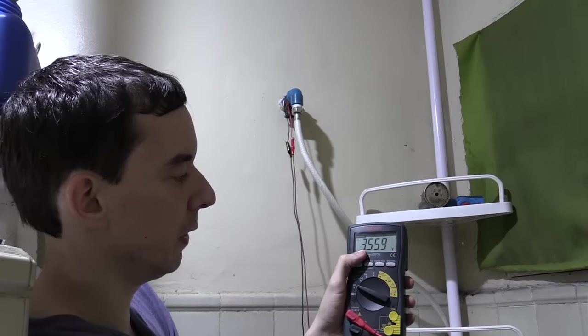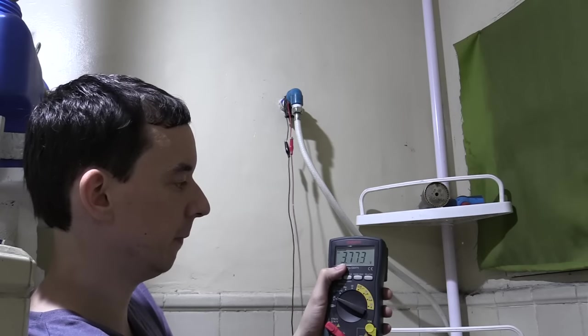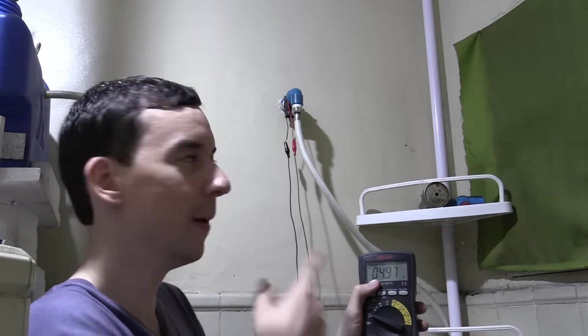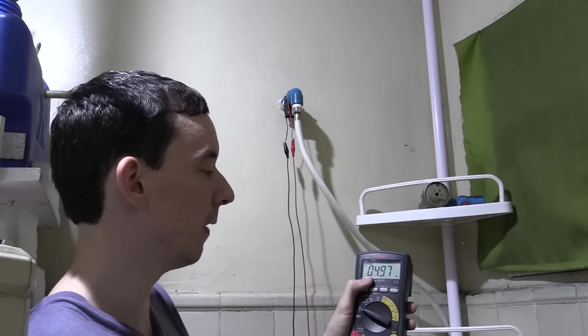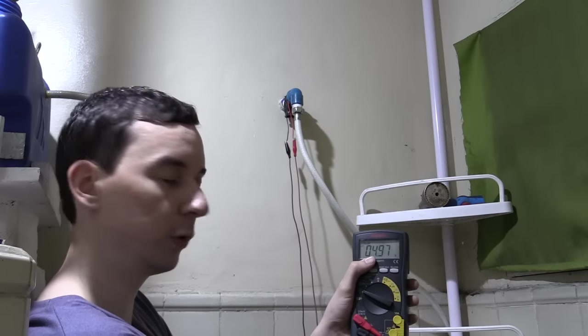So you can see we're now getting around 3.5 volts and that's pretty low pressure. Let's turn it up a bit. Now I don't know if you'll be able to hear on camera but I can hear the turbine spinning pretty fast. We're still at around 4.97 volts. Let's turn up the water pressure a bit.